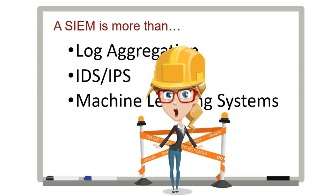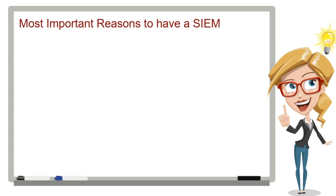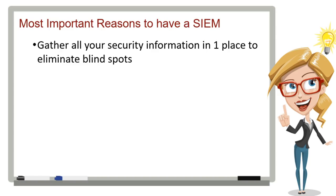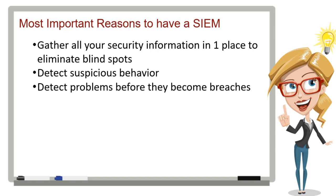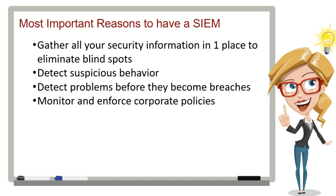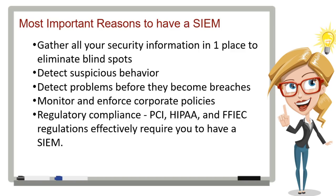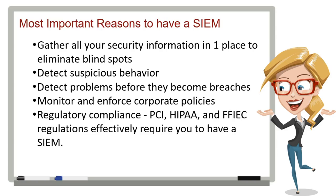There are many important reasons you need to have a SIEM. First, to eliminate blind spots, you need to gather all your security and event information into a single location — detect suspicious behavior without getting bogged down in the mire of false positives. Accurate analysis and correlation allow you to detect problems before they become a breach. Holistic visibility through a SIEM allows you to monitor and enforce corporate policies. Lastly, regulatory requirements including PCI, HIPAA, and FFIEC effectively require you to have a SIEM. A SIEM is a needed tool for both best practices as well as regulatory compliance. To learn more, please visit our website or contact us today.